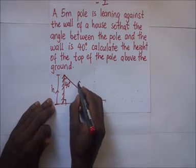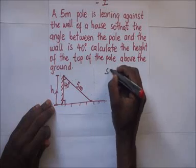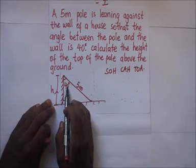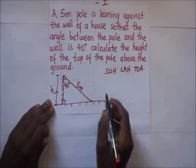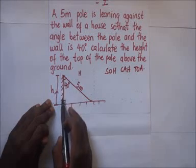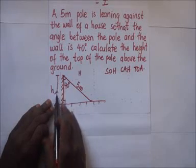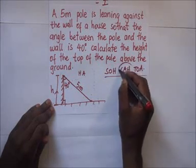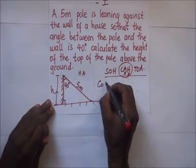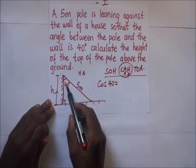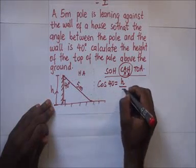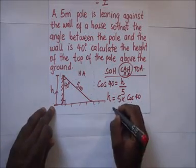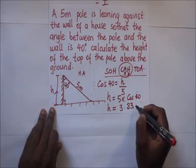The pole is five meters so this side here is five meters. Using SOH CAH TOA, we look for which trigonometric ratio is suitable. The hypotenuse is the longest side — five meters. The side adjacent to 40 degrees is H, the height we are looking for. So we have adjacent and hypotenuse, and we use cosine. Cosine of 40 equals H over 5, so H equals 5 times cosine of 40. The value of H is 3.83 meters.